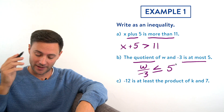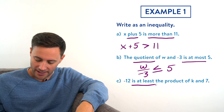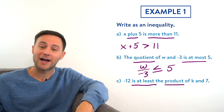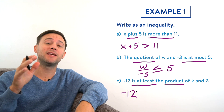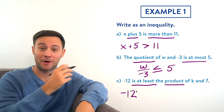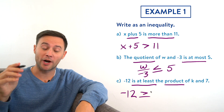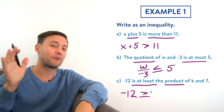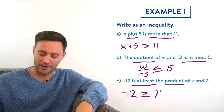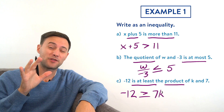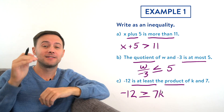Part c: 'Negative twelve is at least the product of k and seven.' Keywords: 'is at least' and 'product.' We start with negative twelve; 'is at least' means greater than or equal to. Product is the answer to a multiplication problem. We're multiplying k and seven, but remember the coefficient comes first, so we write 7k. So negative twelve is greater than or equal to 7k: -12 ≥ 7k.